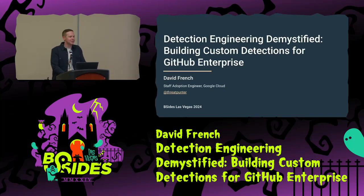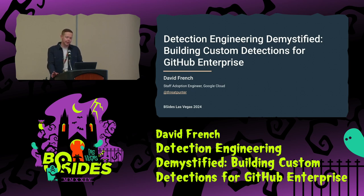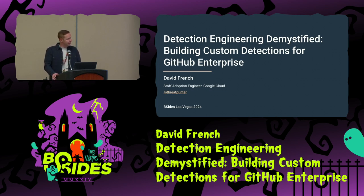Thanks everyone, thanks for coming. This is my first time at B-Sides Las Vegas, so thanks to the organizers for having me. This talk is for anyone who's curious about the world of detection engineering and learning a process and some techniques for building detections that are focused on identifying attacker behavior. Specifically, we're going to be looking at building detections for GitHub today, but my goal is to share some techniques you can use to improve your detection coverage for all platforms and systems that you monitor, not just GitHub.